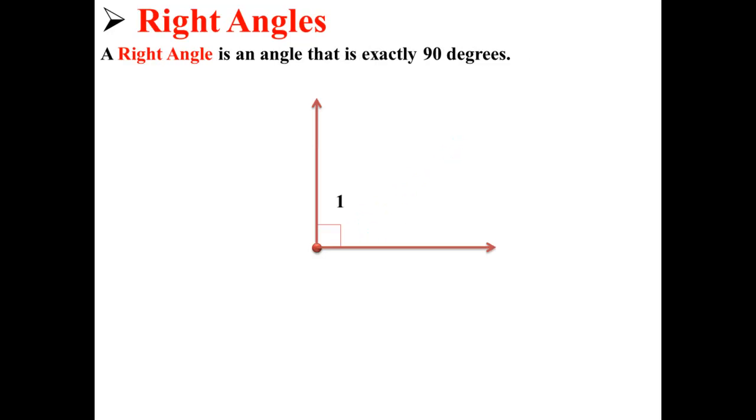A right angle is an angle that has a measurement of exactly 90 degrees. Here angle 1 is a right angle. You can also tell that it's a right angle because we use the box to represent that it's a right angle.